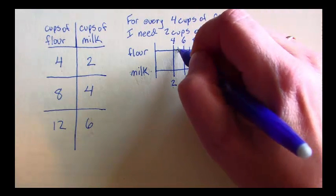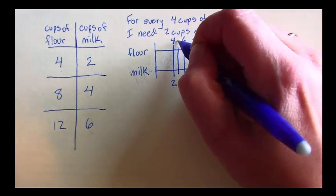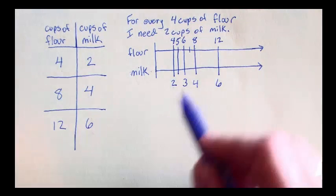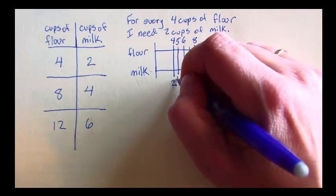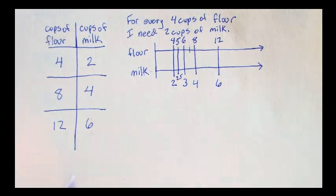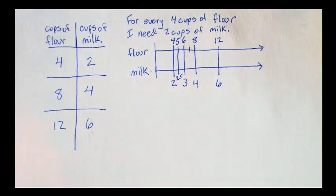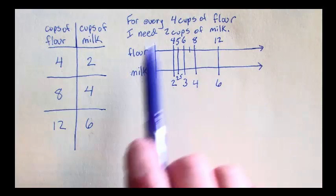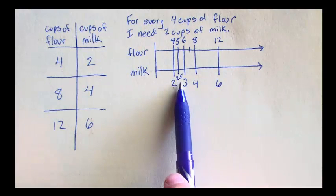I can also see that if I have 5 cups of flour, I need 2 and a half cups of milk. A number line helps you see fractional parts as well as whole numbers. A table is really good for whole number values. A double number line helps you with fractional parts.